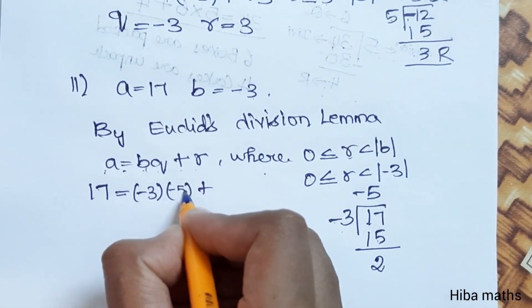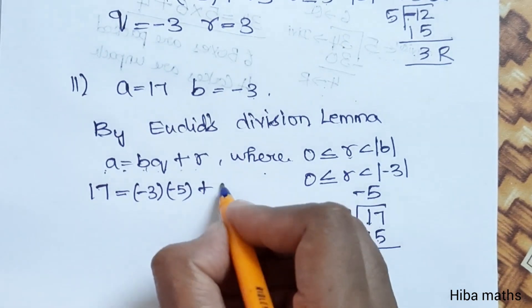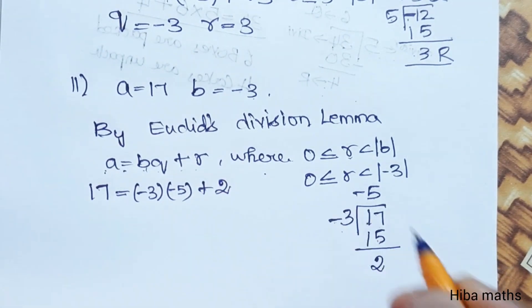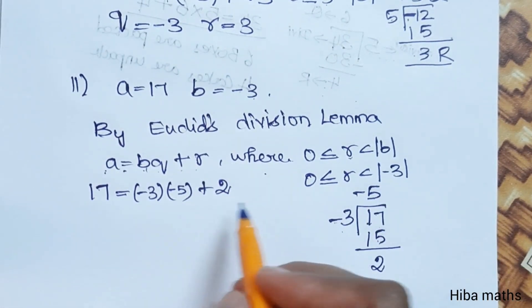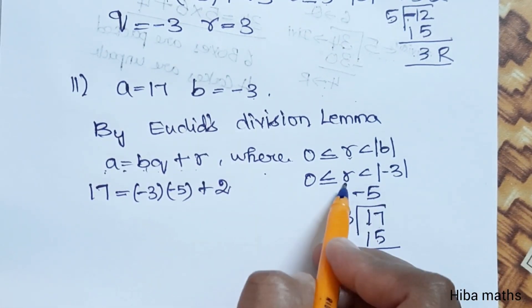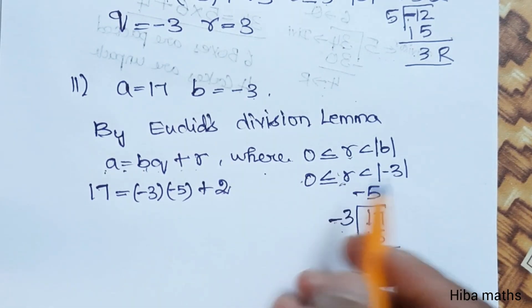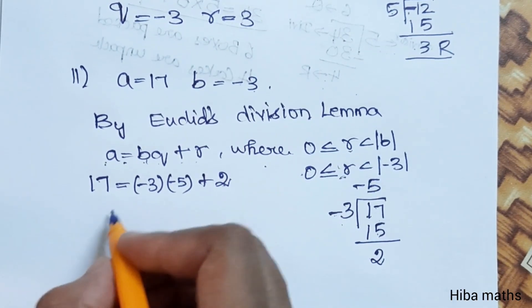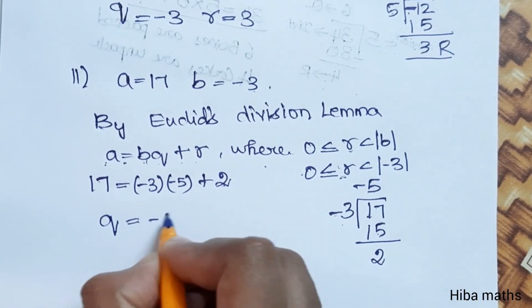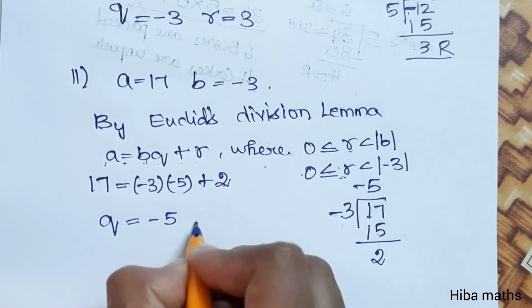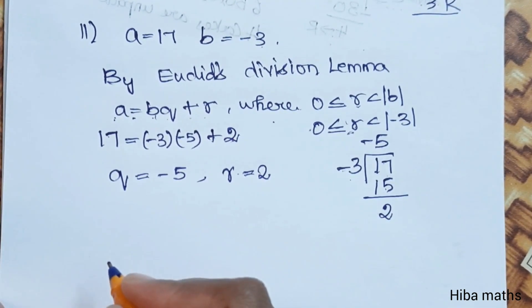So 17 equals minus 5 times minus 3 plus 2, which gives 15 plus 2 equals 17. Now check the R value: 0 is less than or equal to R which equals 2, and 2 is less than 3. Condition is satisfied. So quotient is minus 5, remainder is 2.